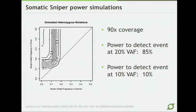If you look at this power simulation from our Somatic Sniper algorithm, which is one of the first-generation variant callers, you'll see that even with 90x coverage, our power to detect events at 20 percent variant allele frequency is only 85 percent, and if we drop down to 10 percent variant allele frequency, it's only 10 percent. So we're clearly missing a lot of these low-frequency things.